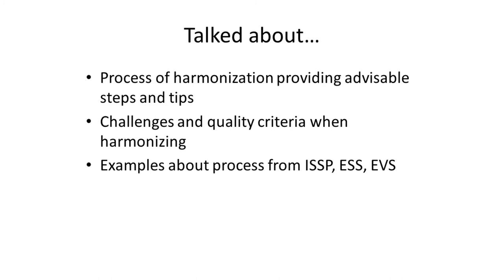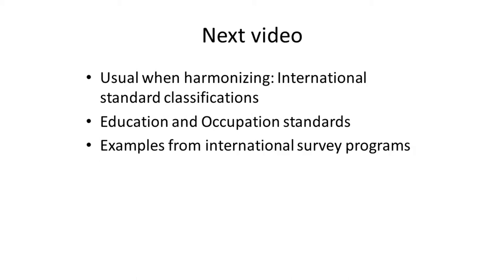Can you remind us what we've covered in this video? We have looked at the entire process of harmonization when it comes to primary data, but also when it comes to secondary data, and we hope we could provide you with some advisable steps and tips that you should consider when doing it. We also had a look at challenges and quality criteria, and finally we had some examples about the process from international survey programs, which might also serve as a good orientation for your future harmonization work. In the next video, we're going to talk about international standard classifications — in particular, two measures that can be really hard to standardize: education and occupation. We'll also look at online digital resources that can guide you and make sure that your harmonized variables are comparable to surveys that already exist.